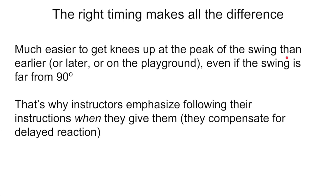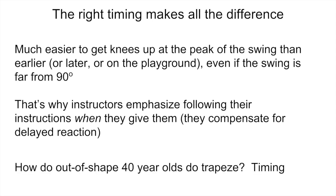That's why the right timing makes all the difference. It's much easier to get the knees up at the peak of the swing than doing it too early, which a lot of beginners do, or too late, or for that matter on the playground on a fixed bar, even if the swing is significantly less than 90 degrees. And that's why the instructors emphasize following their directions when they give them. Of course, they do compensate for the delayed reaction, so they give the call slightly early so that you do the movement at the time that they think will make it most straightforward to achieve. And so that's the answer to how out-of-shape 40-year-olds do flying trapeze tricks, it's timing.